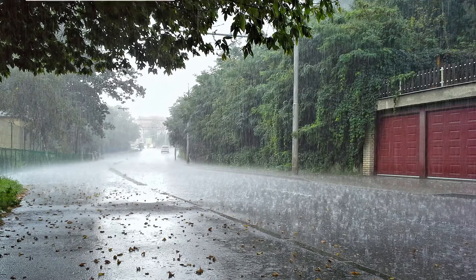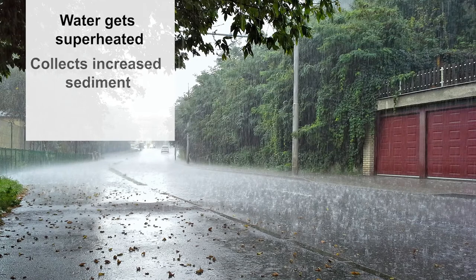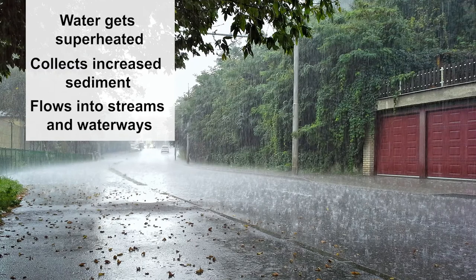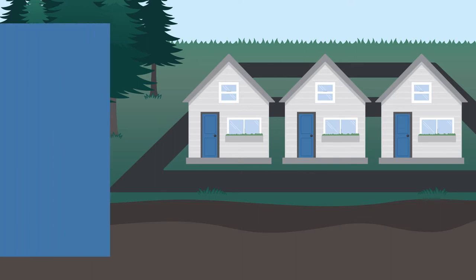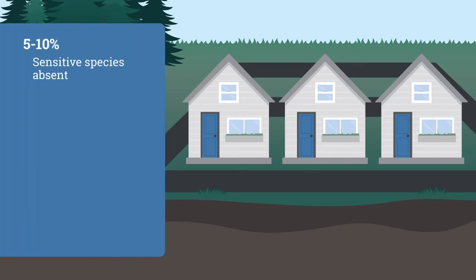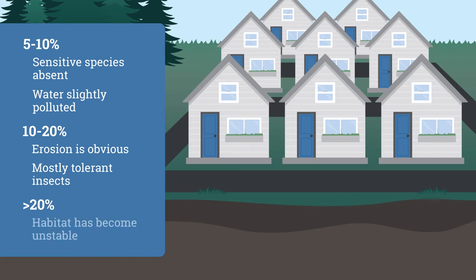The water has nowhere else to go but follow along the impermeable surface as runoff. Stream health is directly related to impervious surface cover. Water runoff gets superheated on dark surfaces as well as collecting increased sediment deposits. This runoff then flows into neighboring streams and waterways which stresses or even kills wildlife. As the percentage of nearby impervious surface increases, so does the impact on wildlife. At 5-10%, sensitive species are absent and water may be slightly polluted. When it gets to 20%, erosion is obvious and only mostly tolerant insects can remain. Above 20% and the habitat has become unstable for native fish and diverse wildlife.